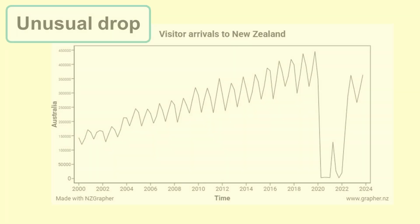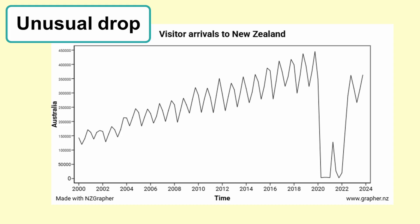When we see unusual behaviour in a time series we need to find out a likely cause for it. For example, the COVID-19 pandemic caused an unusual drop in visitor numbers to New Zealand as the borders were closed for several months.